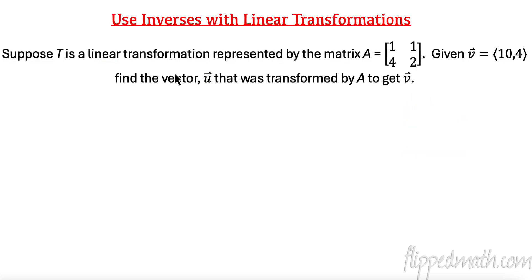All right. We're going to use inverses now with some linear transformations. And what this says is, suppose T is a linear transformation represented by the matrix A. Given that we have some vector 10, 4, find the vector U that was transformed by A to get V. So what does that mean? So I have a vector U, and it was transformed by A. So A times U gave me our new vector V.